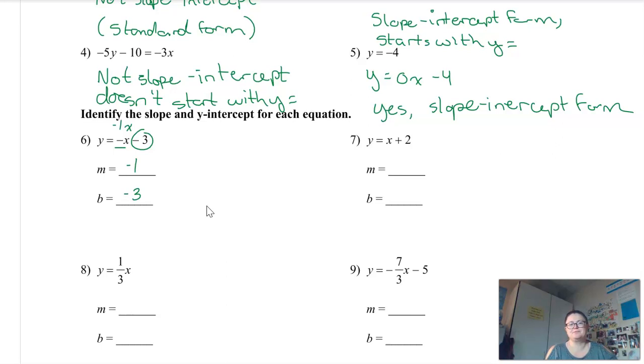Okay, so let's look at number seven. I want you to think for a second. What do you think the slope is? There's nothing in front of x. So the number in front of x would be one, right? Because if you don't write anything, it's a one. So m is one and b is two.